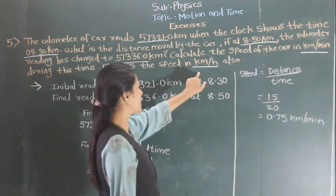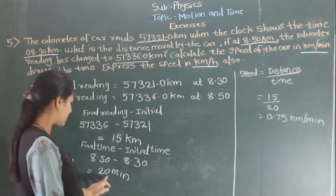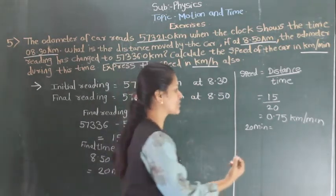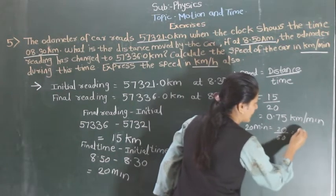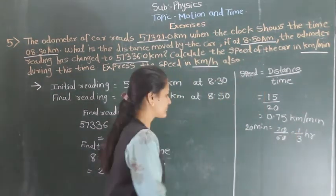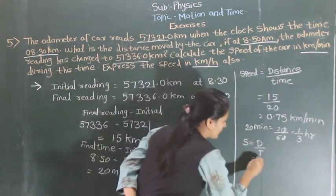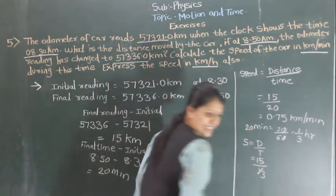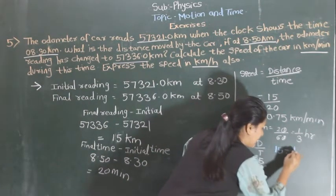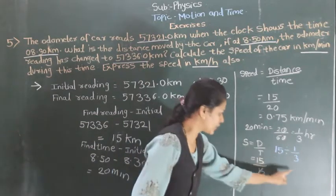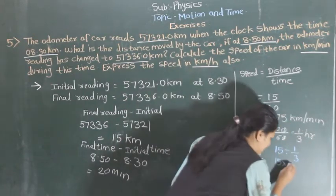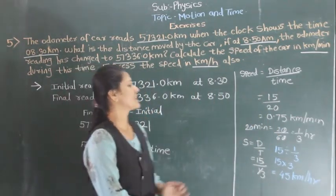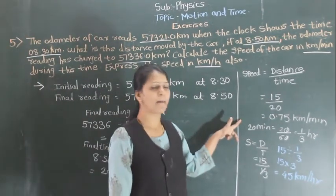Now the next step is to calculate the speed in km per hour. 20 minutes you have to convert into hours: divide by 60, so it becomes 1/3 hour. Speed is equal to distance upon time: distance is 50 km and time is 1/3 hour. 50 divided by 1/3 means 50 multiplied by 3, which equals 150 km per hour. So the speed in km per hour is 150 and the speed in km per minute is 2.5.